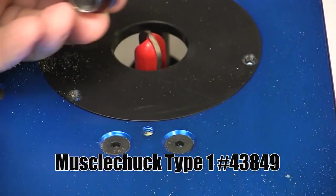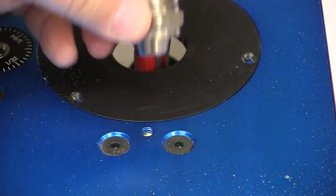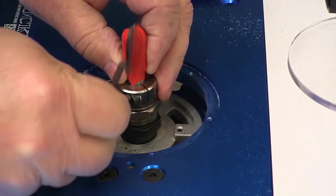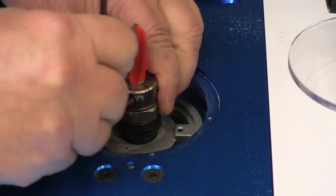This muscle chuck eliminates having to use wrenches to change bits. This chuck screws onto the router in place of the collet. To secure or loosen the bit use the hex key rather than those wrenches that kept pinching our fingers.